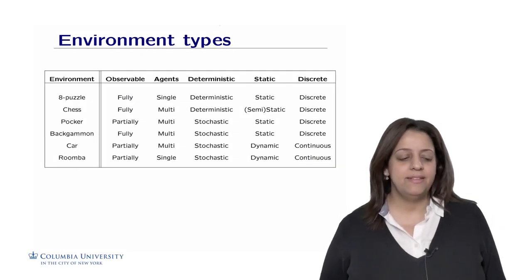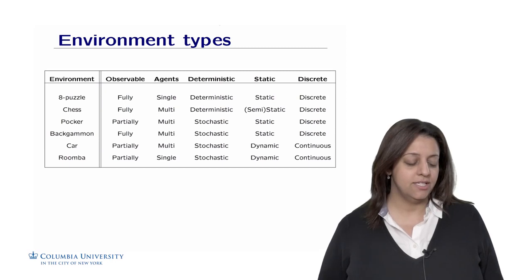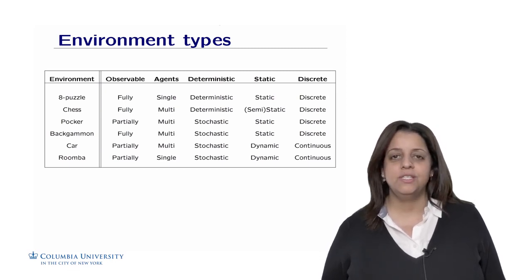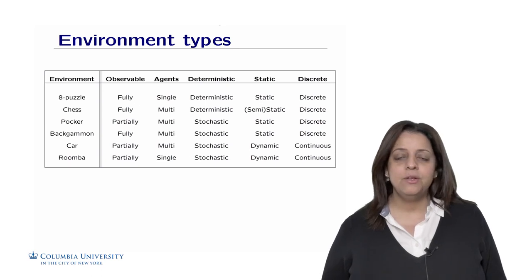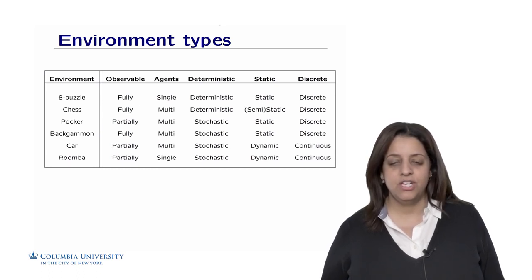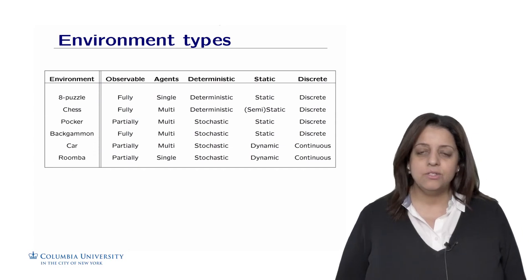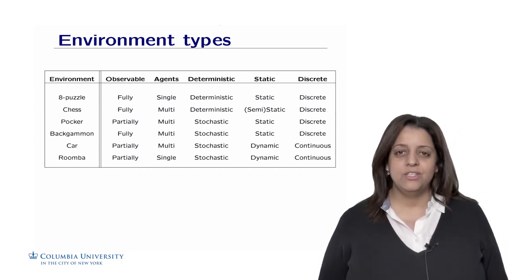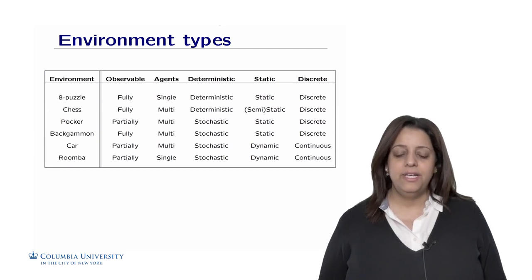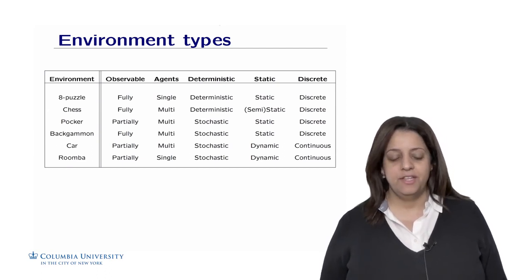Let's illustrate the concept of environment types on different environments and different agents. For the 8-puzzle, it's fully observable because you can see the game at all times. There is only one player, so it's a single agent. It's deterministic and also static — there is nothing going on around you and no chance that random events will change the course of your actions. Finally, it's discrete because there is a finite number of things you can do.